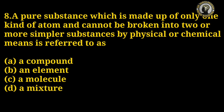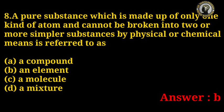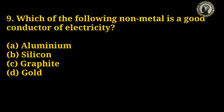Question number 8: A pure substance which is made up of only one kind of atom and cannot be broken into two or more simpler substances by physical or chemical means is referred to as what? Options: a compound, an element, a molecule, a mixture. The right answer is B — element.